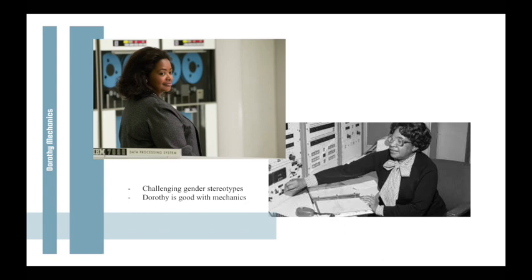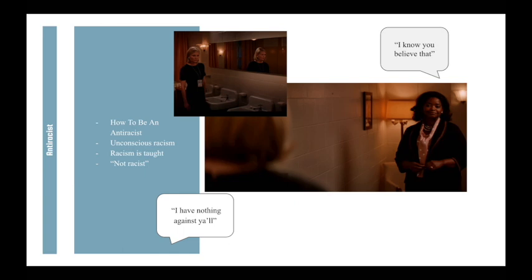We could use the term hostile sexism to explain this. Hostile sexism is the idea that men are far more competent than women and therefore should hold higher positions in the workplace and get paid more. Dorothy proves them wrong and eventually gains a superior position working with the IBM machine. A scene displayed at the end of the movie shows a white woman by the name of Vivian Mitchell telling Dorothy, "I have nothing against y'all," referring to the black women working for NASA. Dorothy responds with, "I know you believe that." Here, Dorothy is basically saying that she understands Vivian is not intentionally racist and that Vivian, in fact, believes she is not racist. However, because of what we have learned in Kendi's How to Be an Anti-Racist, we know that one cannot simply be "not racist" — you can only be racist or anti-racist.